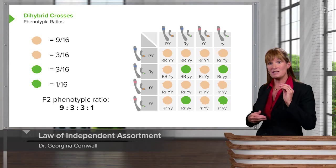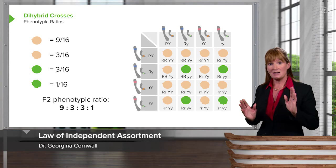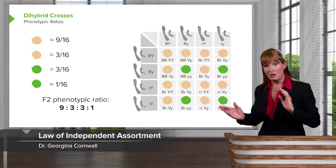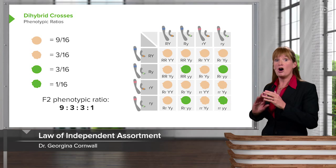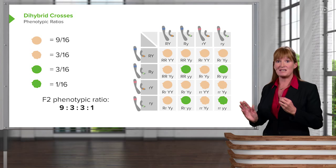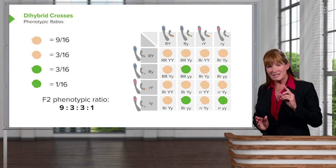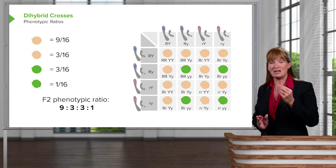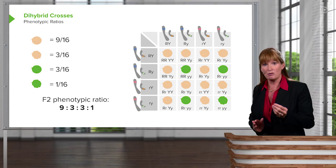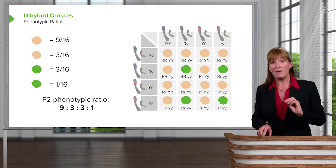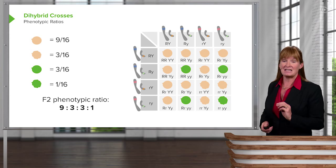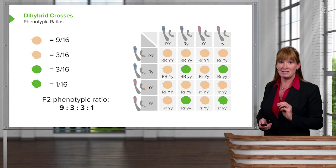Round and wrinkled, yellow and green, purple and white — all move separately from each other. This is because they were indeed on separate chromosomes, and so we have a very nice pattern that results.